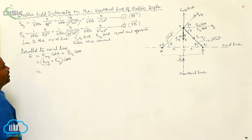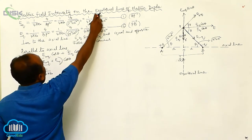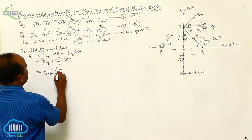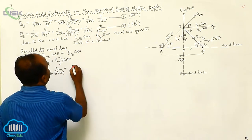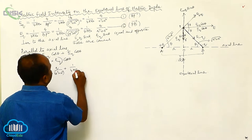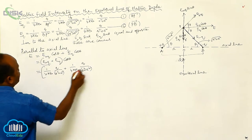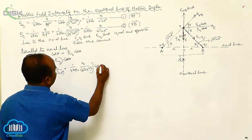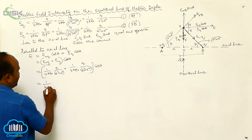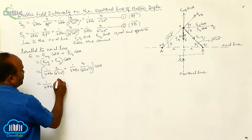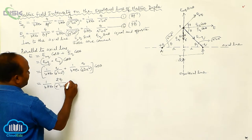EF plus Q equals 1 by 4 pi epsilon naught times Q by R square plus A square. EF minus Q also equals 1 by 4 pi epsilon naught times Q by R square plus A square. Therefore, E equals 1 by 4 pi epsilon naught times Q by R square plus A square, into cos theta.